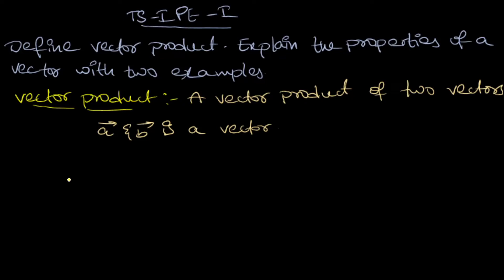Hello students, welcome to Swapna Physics Classes. In this lecture I am going to explain one more important short answer question for your TS IPE first year examination. The question is: define vector product and explain the properties of vectors with two examples.